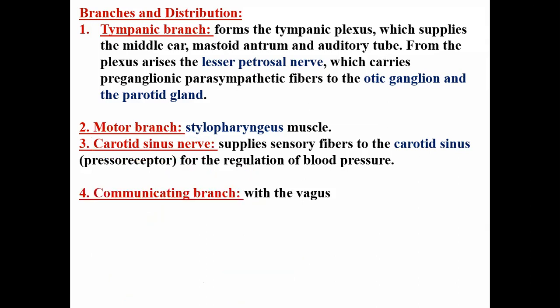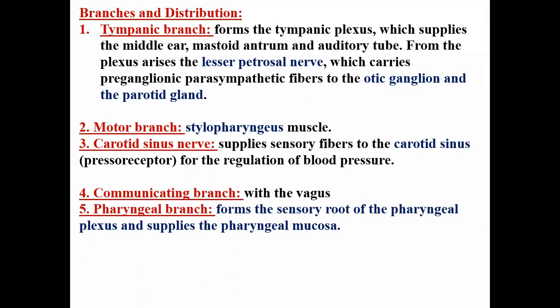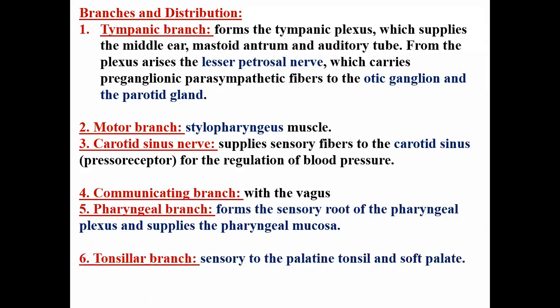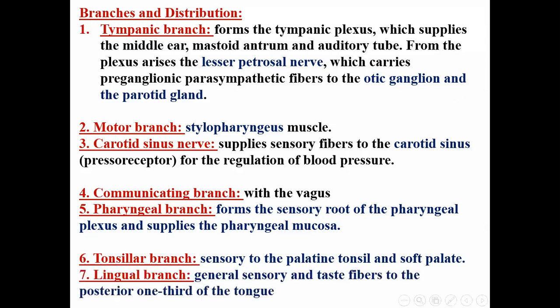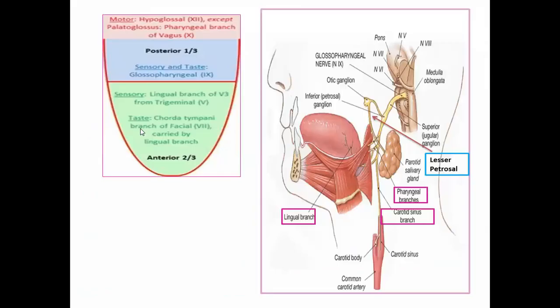Also communicating with the vagus, the pharyngeal branch provides sensory to the pharynx and the tonsillar branch to the tonsil. The glossopharyngeal supplies the pharynx, the pharyngeal sensory, the tonsil, and the lingual branch supplies the posterior one-third of the tongue.